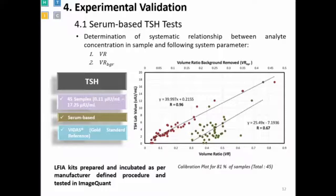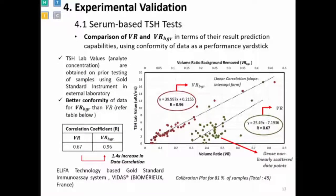The TSH values from those external laboratories were measured using the VIDAS instrument, which uses LFA technology and is a state-of-the-art system. Comparing lab values from VIDAS against our two algorithms — the initial VR and the background-removed VR — the background-removed approach gives R of 0.96 versus 0.67. This final equation can be used as a calibration equation for predicting TSH values for unknown samples.